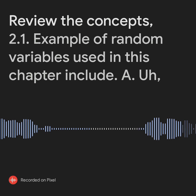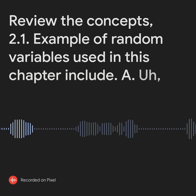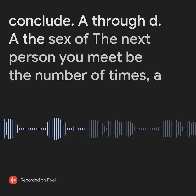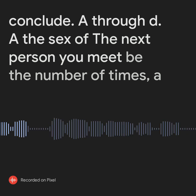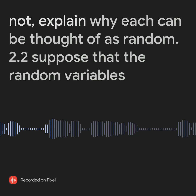Review the Concepts 2.1. Example of Random Variables Used in this Chapter. Classify A through D: A. The sex of the next person you meet. B. The number of times a wireless network fails. C. The time it takes to commute to school. D. Whether it is raining or not. Explain why each can be thought of as random.